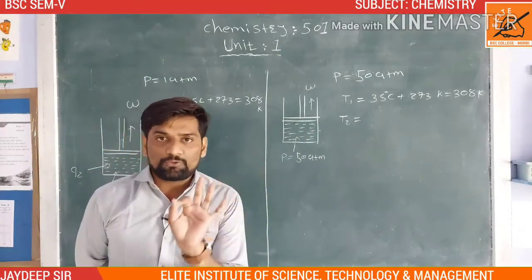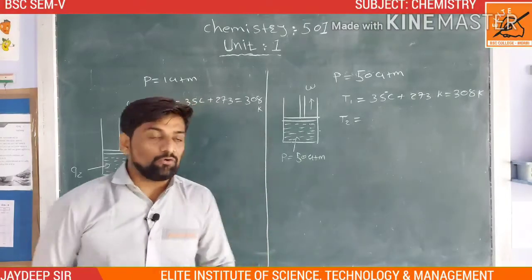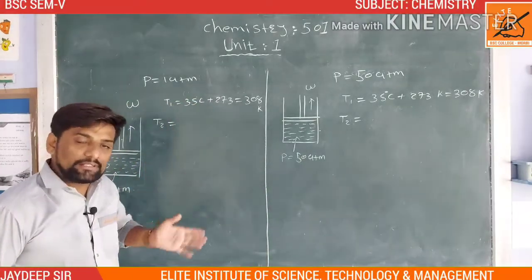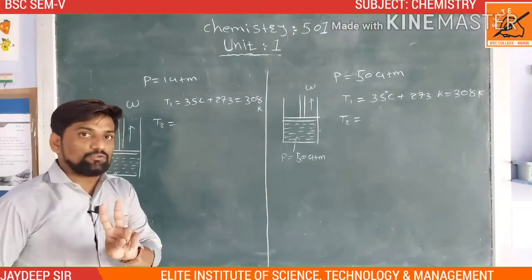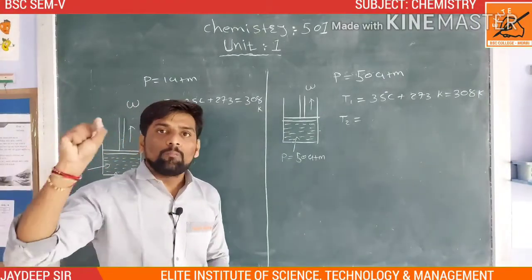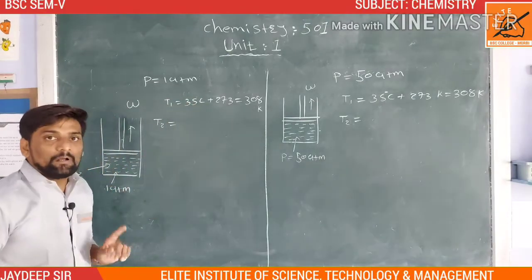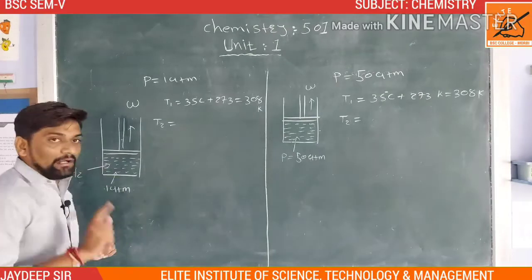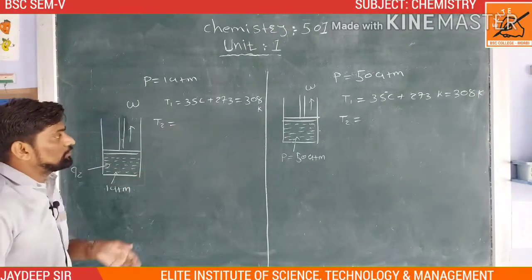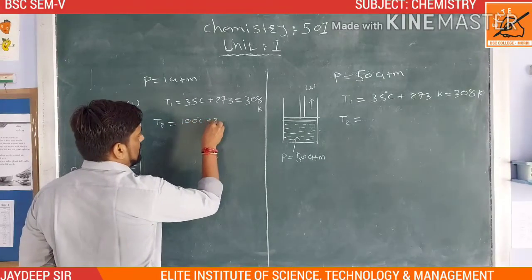In the first situation, the source temperature T2 is equal to the boiling temperature of water at 1 atmospheric pressure, which is 100 degrees Celsius.